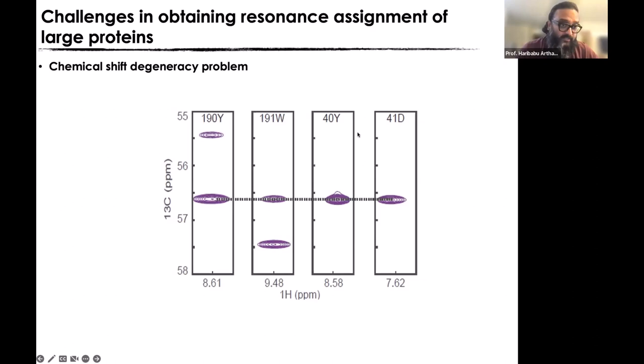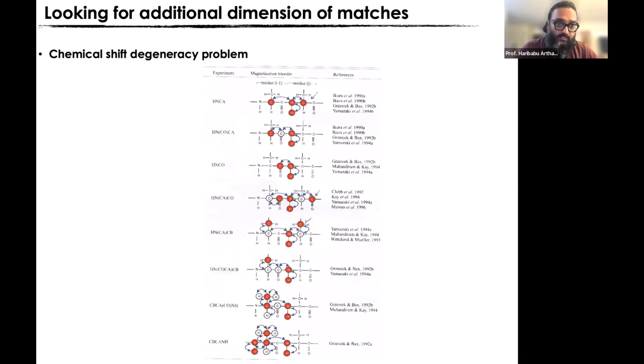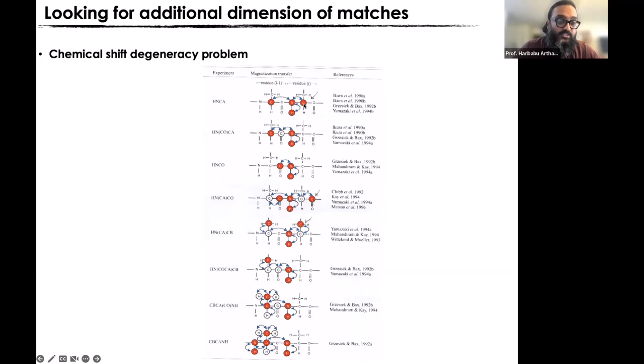To break this degeneracy, we go to other experiments. The HNCA experiment gives transfer from nitrogen both to its own C-alpha and to C-alpha-minus-1. If you have degeneracy there, we go to the HNCACB, where we do an additional transfer and record the C-beta frequency instead of C-alpha. The hope is that if C-alpha shows degeneracy, the C-beta is different, thereby breaking it — like narrowing down a name by asking for both the first letter and the second letter.